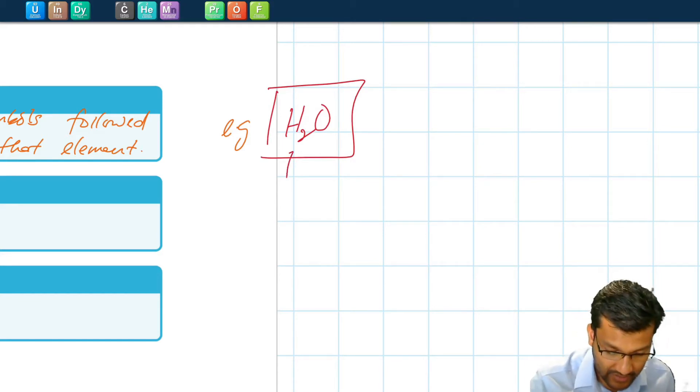It has an element H, the subscript detailing how many hydrogens there are - two in this case. Another element oxygen, and we don't usually write the one there because it's implied that if you don't write anything there, there's at least one of that element. So H2O.